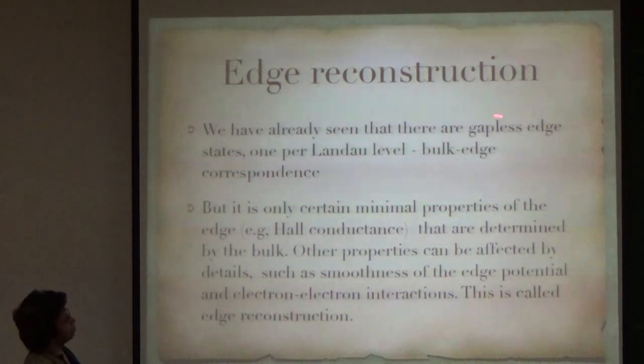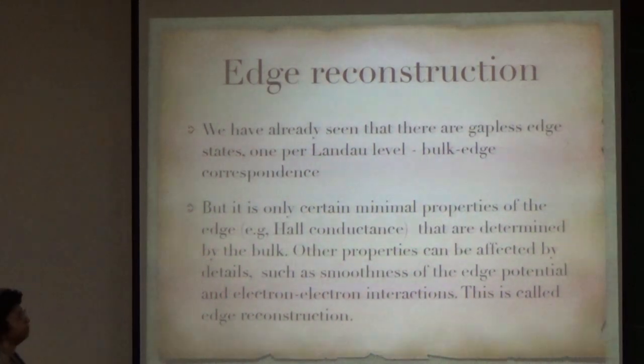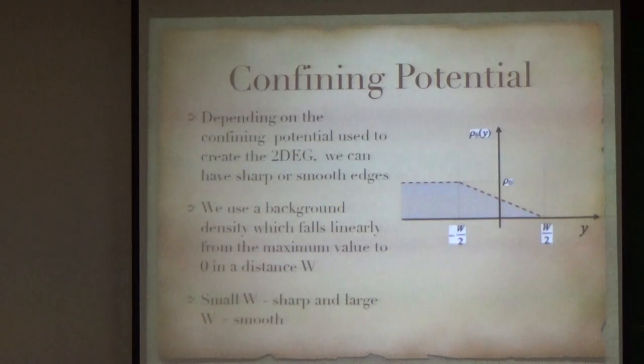The second effect is that of something called edge reconstruction. I have already shown that there are gapless edge states, one per Landau level, which is what we call the bulk edge correspondence. But it is only certain minimal properties of the edge such as the Hall conductance that are determined by the bulk. Other properties can actually be affected by details such as the smoothness of the edge potential and electron-electron interactions. This is what is called edge reconstruction.